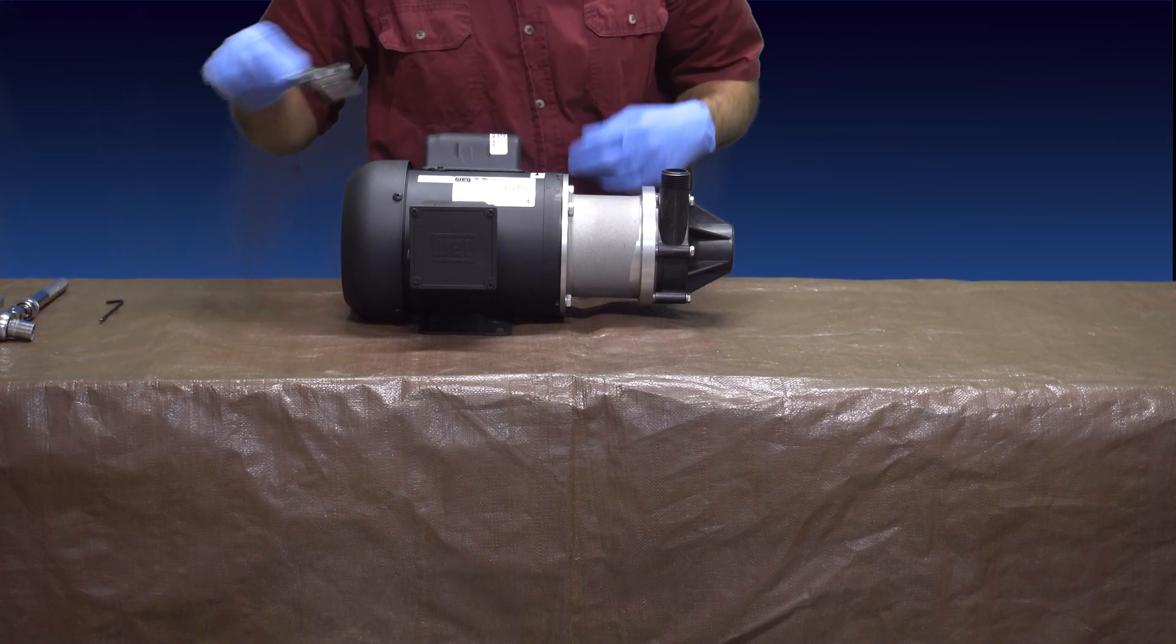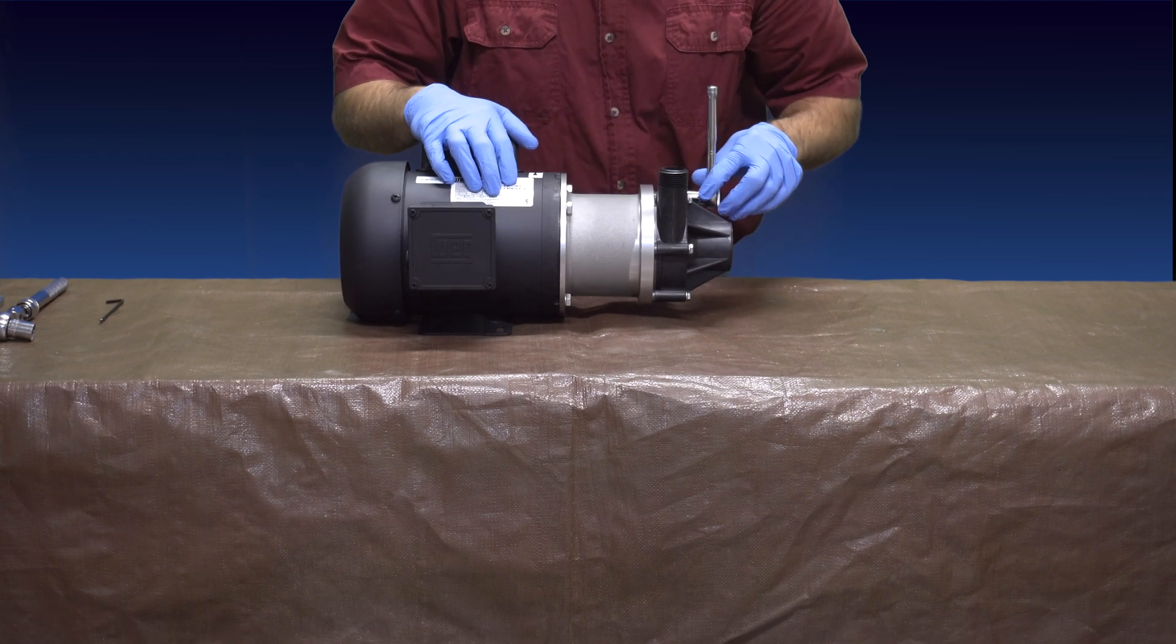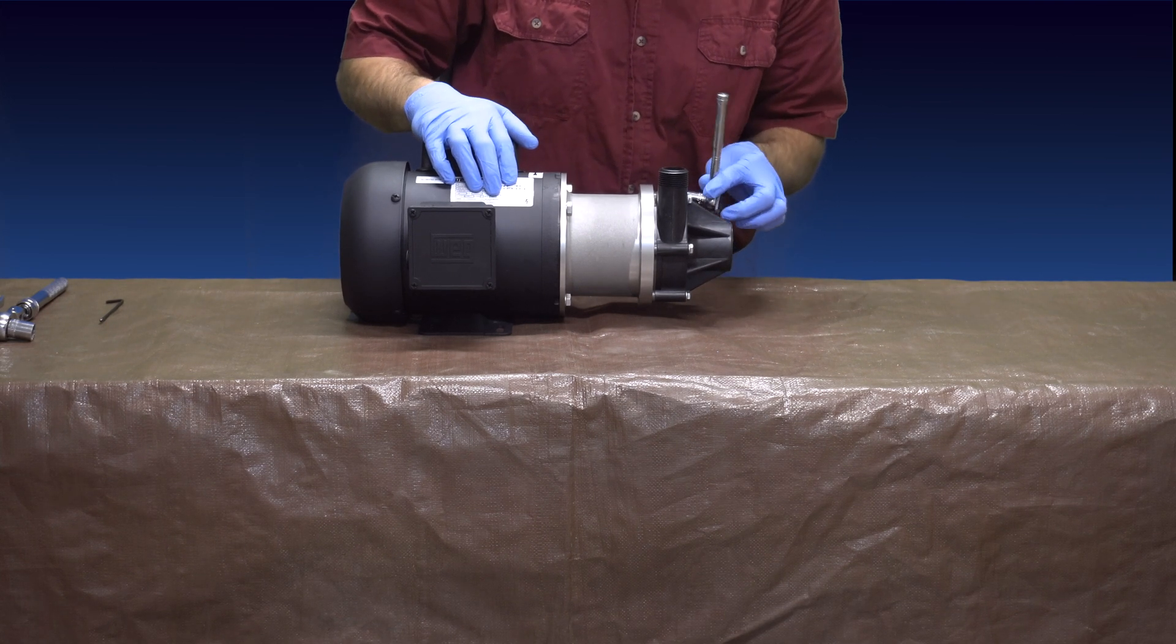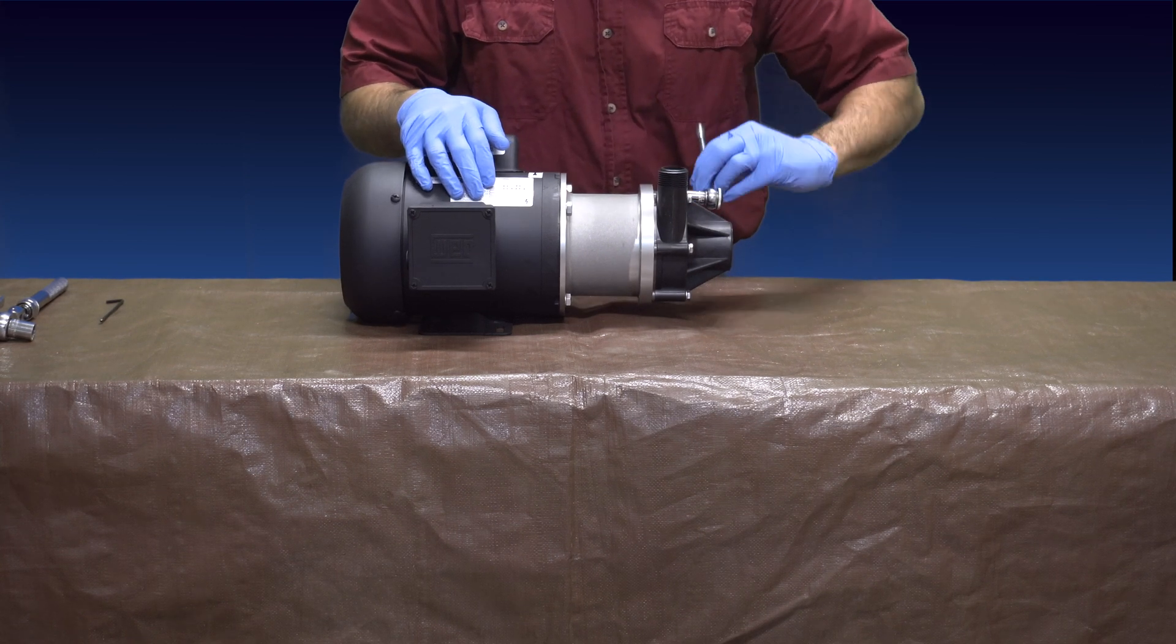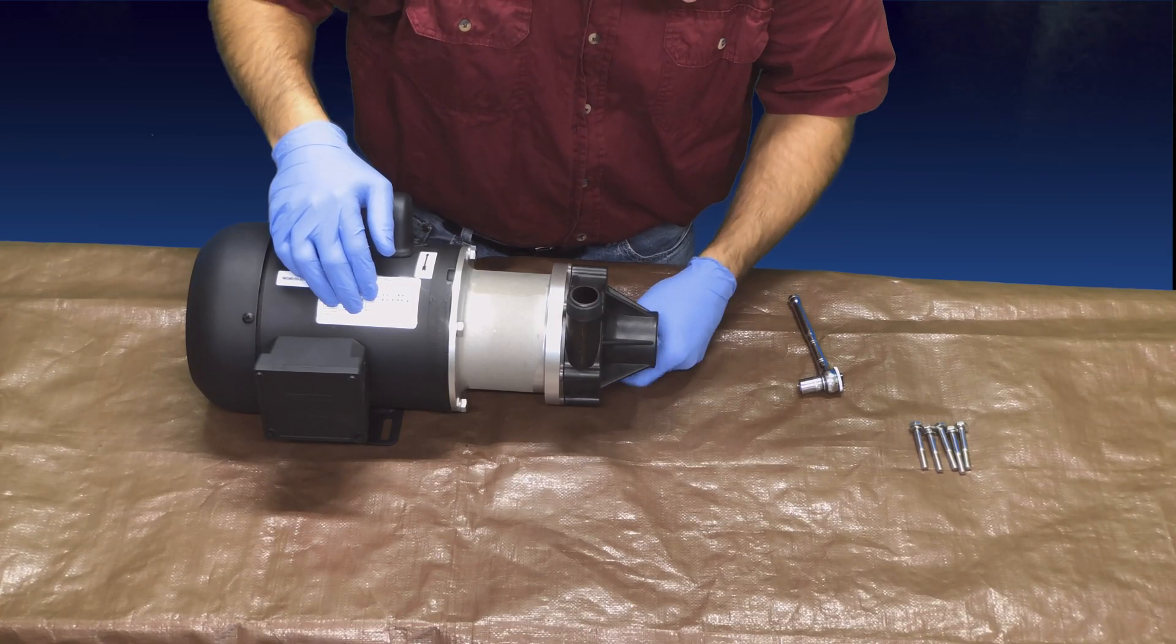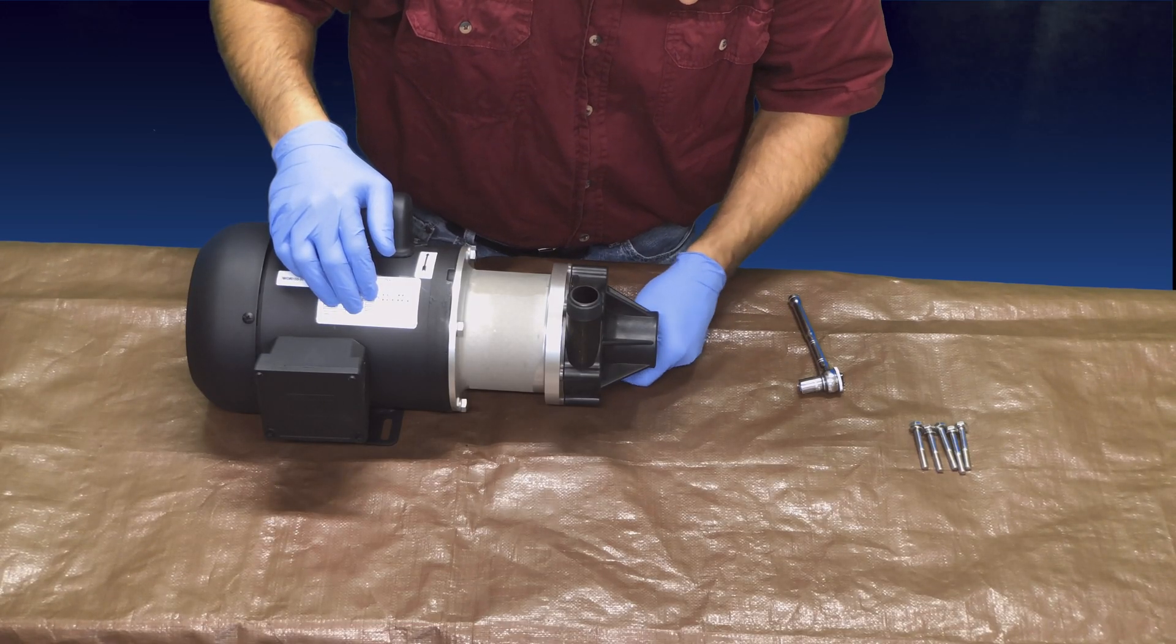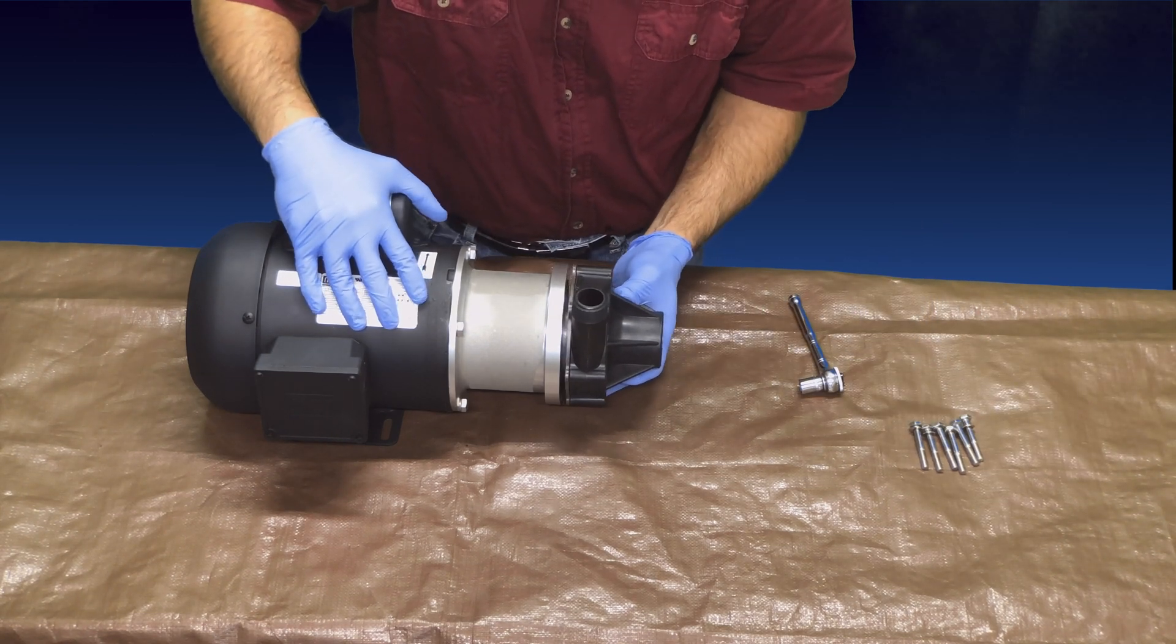The pump assembly consists of a drive end section and a wet end section. We are going to start by removing the components of the wet end section from the drive end section. Use a 7/16 inch wrench to remove the six screws holding the wet end to the drive end. Now the wet end can be removed by pulling it straight out. You will need to pull firmly because you are also separating the magnetic coupling when performing this step.